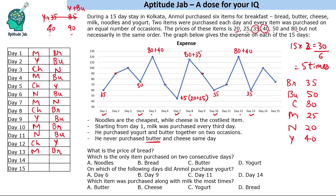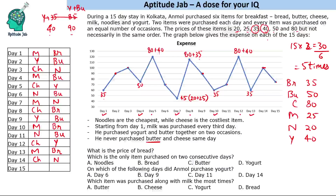Day 14 totals 100, possible only with 80 plus 20 — cheese plus noodles. Day 15 totals 75. Both 40 plus 35 and 50 plus 25 equal 75, but 50 plus 25 would mean milk, and we know milk is only purchased on days 1, 4, 7, 10, and 13. So day 15 must be 40 plus 35 — bread and yogurt.